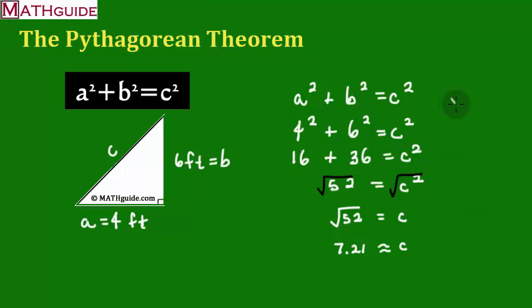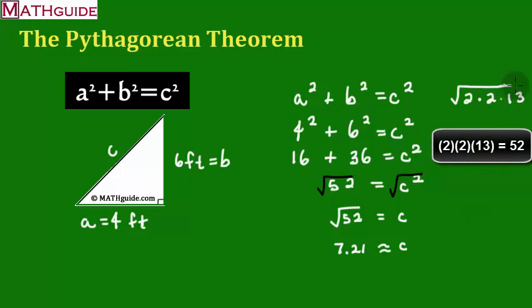It turns out, if you do make a factor tree, 52 turns out to be 2 times 26. But 26 is 2 times 13. So that's what the square root of 52 is equal to. I'm just breaking up the square root of 52. So, 2 times 2 times 13 is really 52.